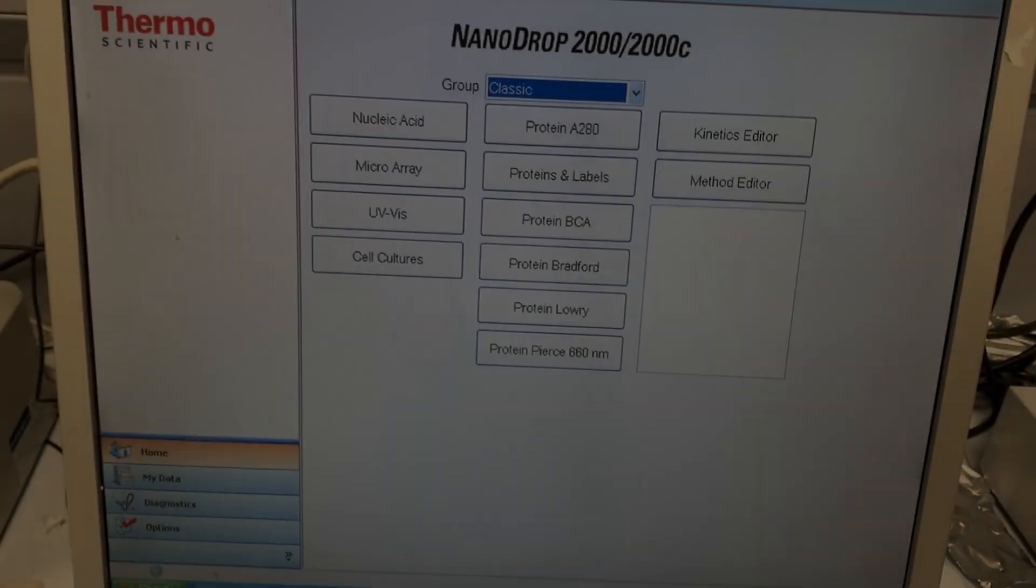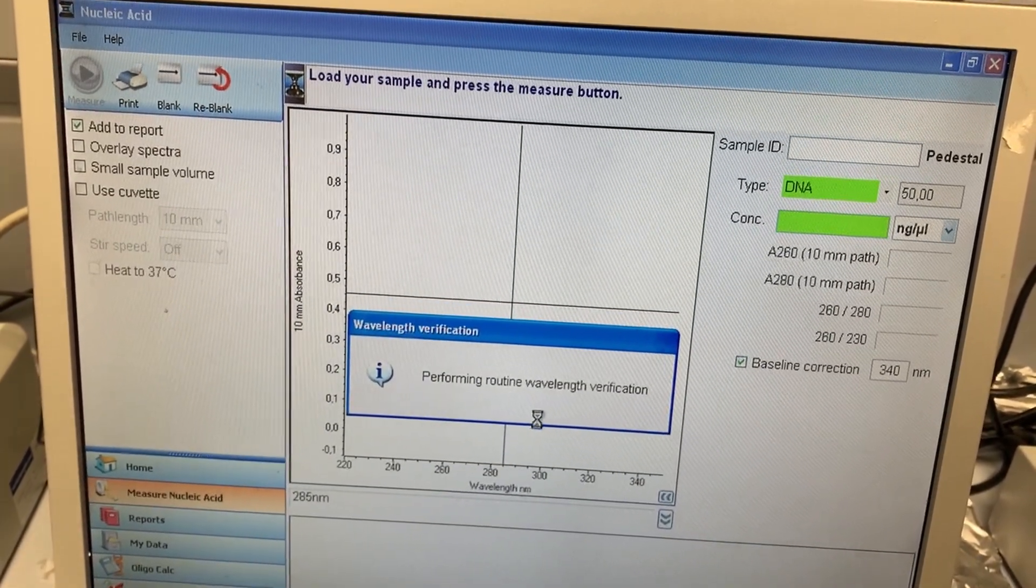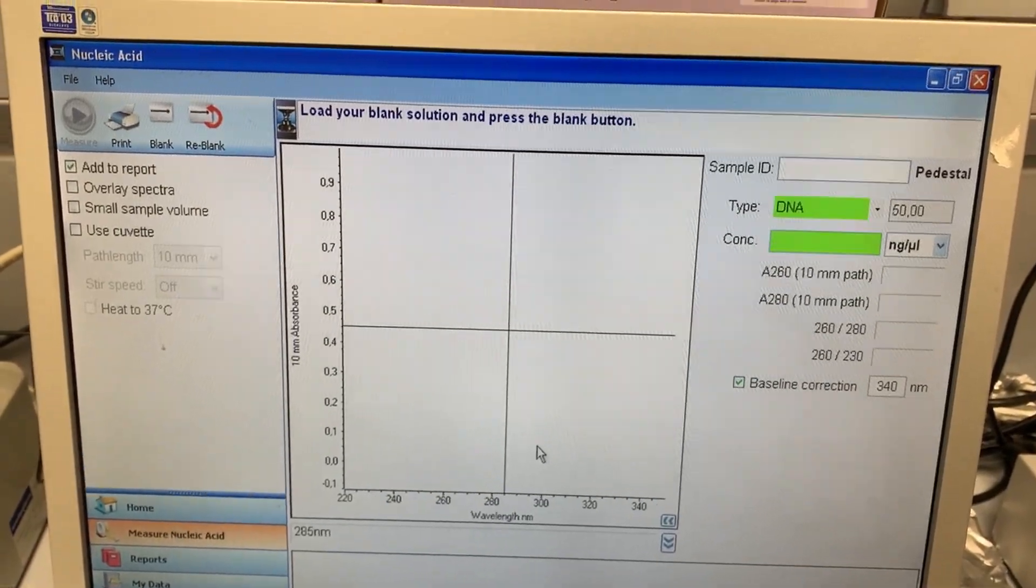First of all, you have to open the Nanotrop program and select nucleic acid. Make sure to select DNA. And then the machine will ask you to blank.